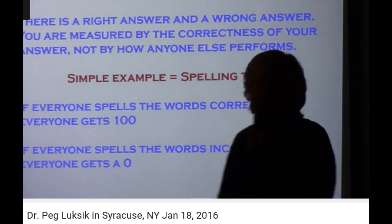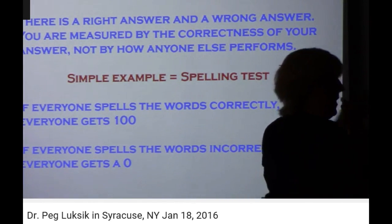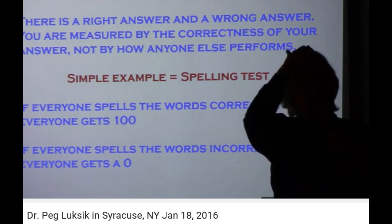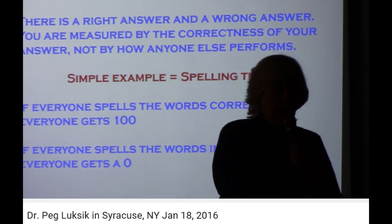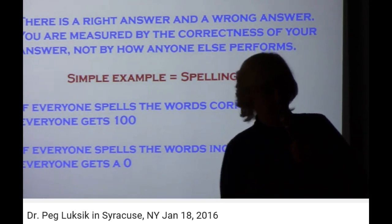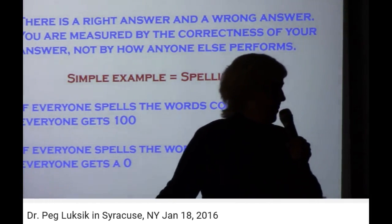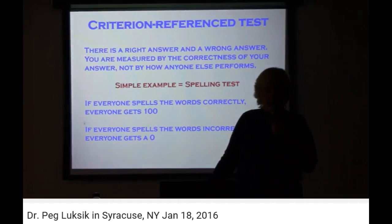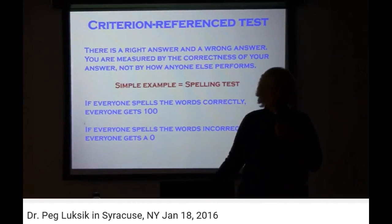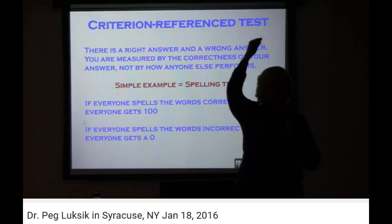The tests are what are called criterion reference tests, and if you've been involved in this, you'll hear them talk about it. In a criterion reference test, there's a right answer and a wrong answer. The other kind of testing is a norm reference test — that's testing on the curve. You hoped everybody flunked and you hated the kid who got a 95% because then it moved the A way up higher.